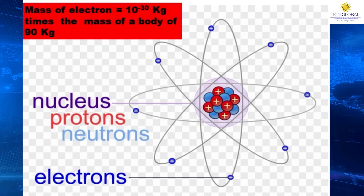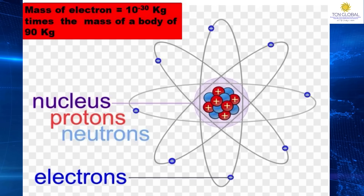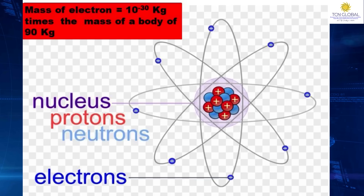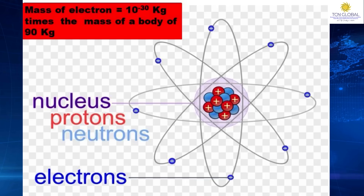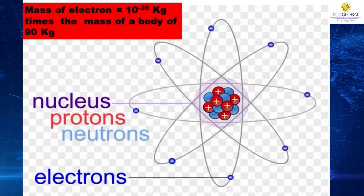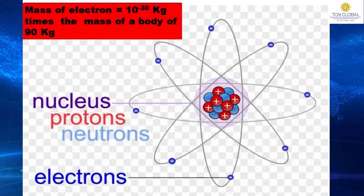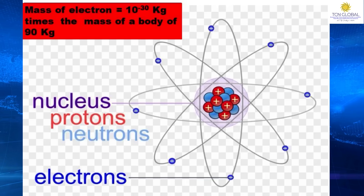How they behave differently from the macroscopic world we deal with in everyday life is the point to be discussed here. If we look at the atom picture, we can see that the nucleus is composed of neutrons and protons, and electrons are revolving around the nucleus. The mass of such particles is very small — for example, an electron is 10 to the power of 30 times less than our body mass.